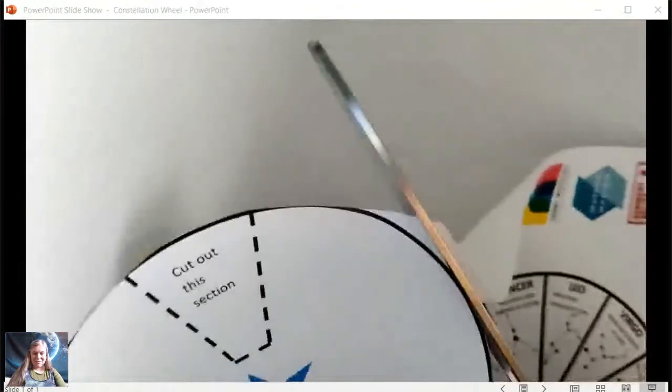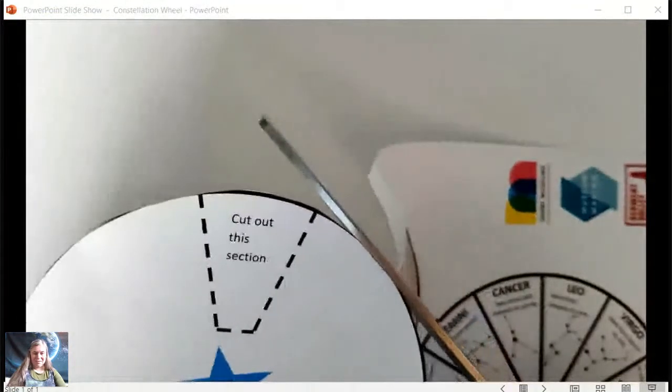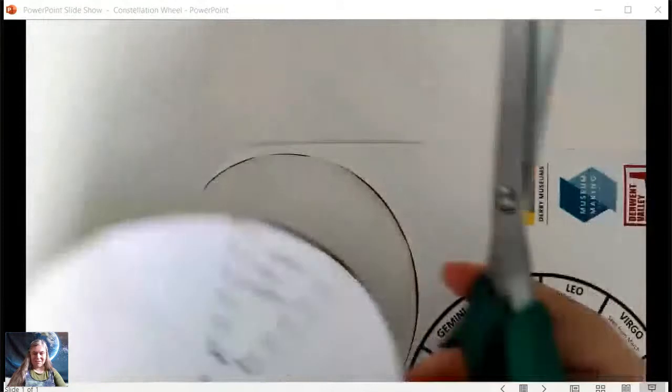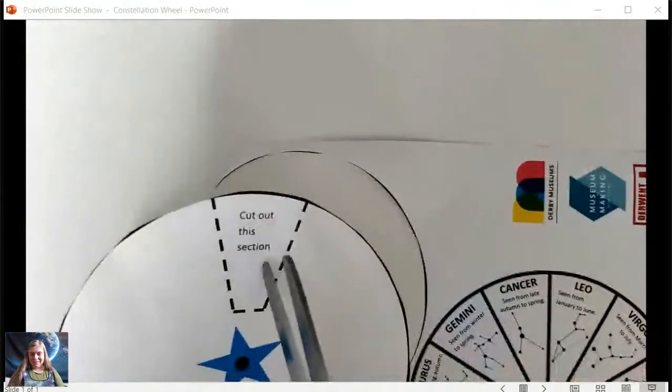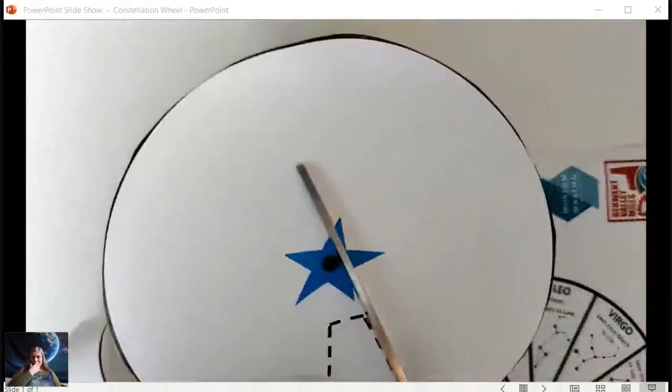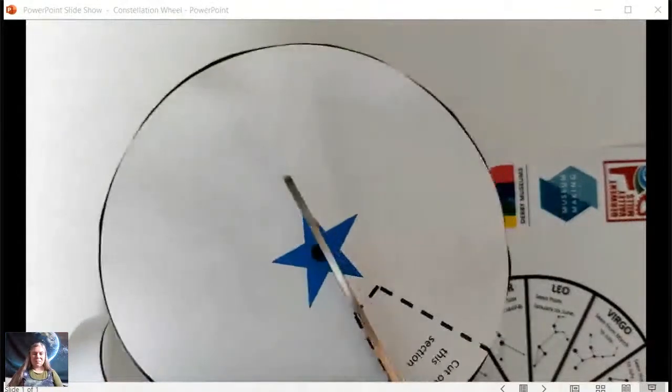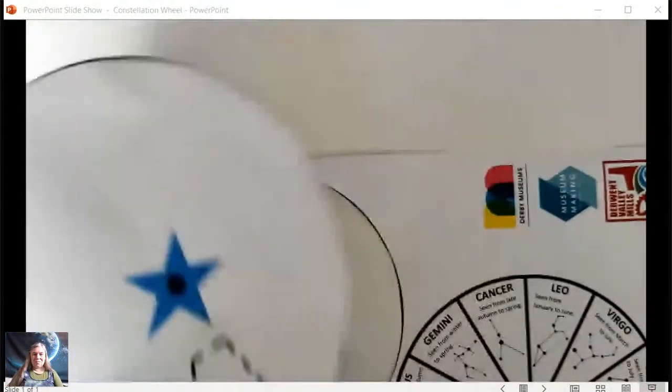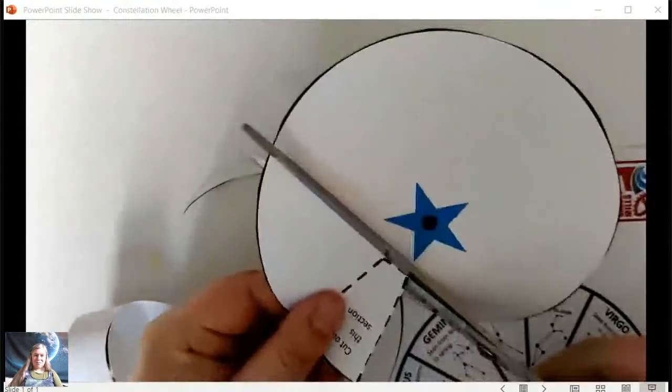Better to do it with paper than not doing it at all because you think, 'Oh no, I haven't got exactly the right things.' You can usually improvise a little. Here it says cut out this section, so I'm going to cut down the dotted lines here and here, and then cut out that section. There we go.